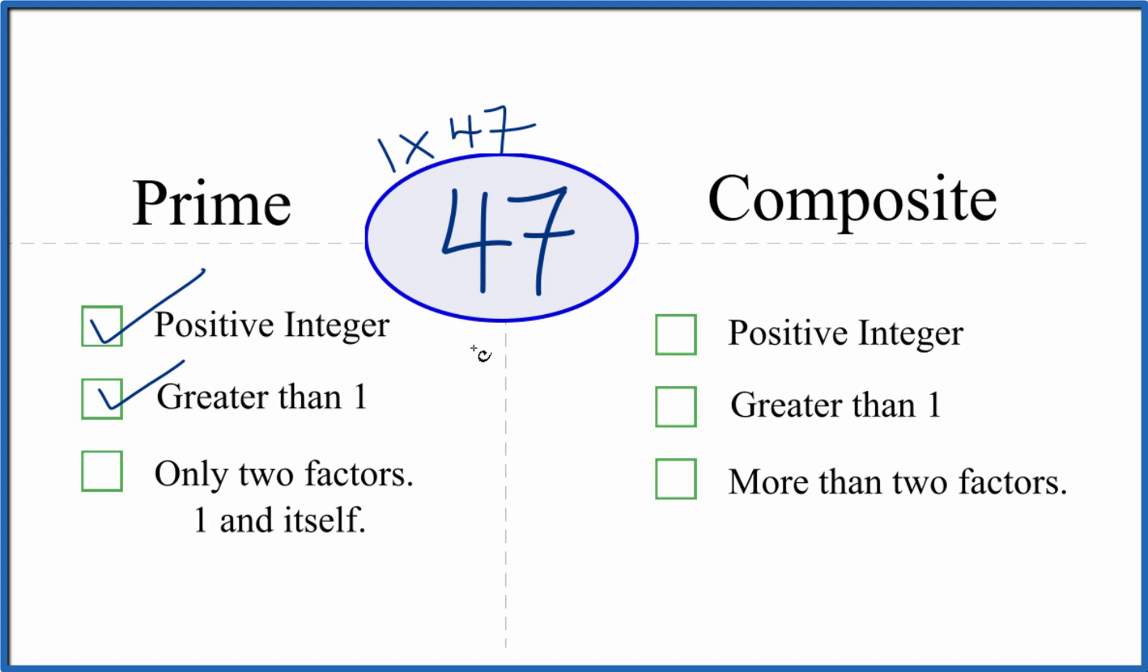It turns out that there aren't any more. So there are only two factors, 1 and 47. That makes 47 a prime number.